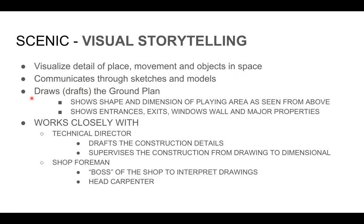The ground plan shows the shape and dimension of the playing area as seen from above — technically as seen from about three feet above the ground — because that way you can see where the windows are, where the openings of the doorways are, and where furniture is. In general, you see the furniture from the top. It shows the entrances, exits, windows, walls, and major properties — and we went through that last time with the director.